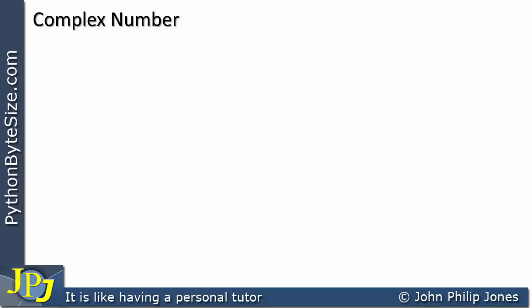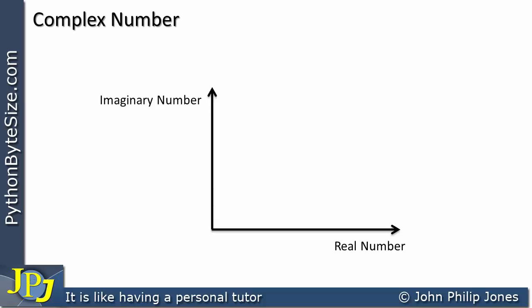When you have a complex number it is possible to plot it onto what's called an Argand diagram. I'm not going to go into the theory of complex numbers here, but I need to emphasize that the absolute function does work with these types. Here we can see a line representing real numbers and a line representing imaginary numbers. We have a real number A and an imaginary number B, which we can plot like any graph.